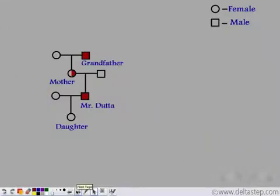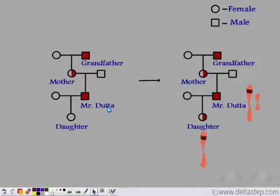Now what is the chance of Mr. Dutta's daughter being a carrier for the disease? Well yes, she has 100% chances of being a carrier. Irrespective of whether Mr. Dutta's wife is a carrier or if she is normal, this diseased X chromosome will pass on to his daughter and that is how she will be a carrier always.